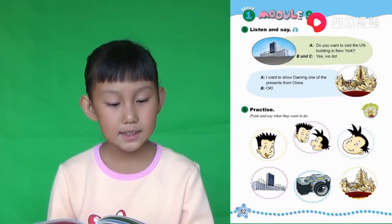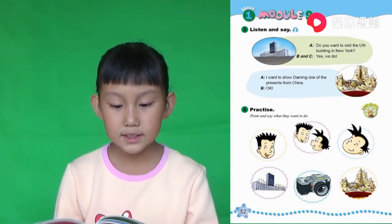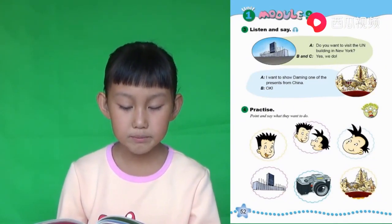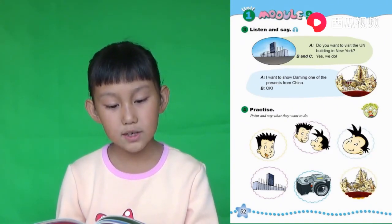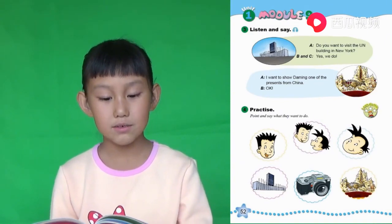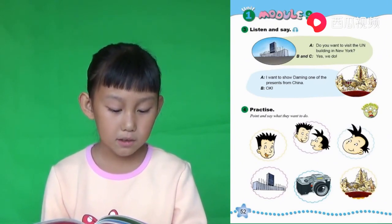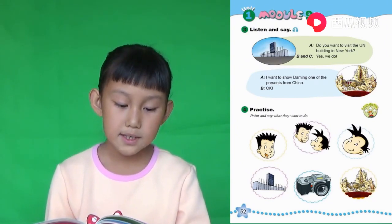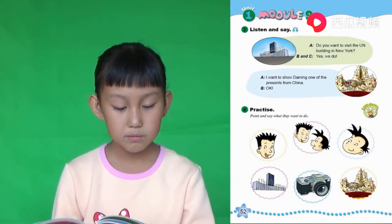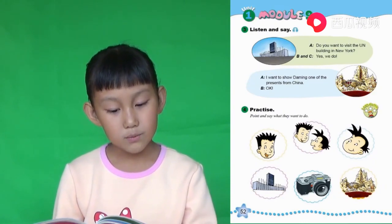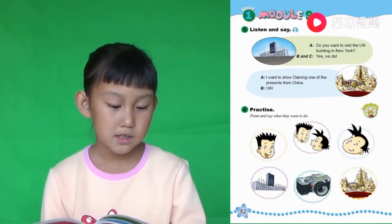3. Listen and say. Do you want to visit the UN building in New York? 你想去参观纽约的联合国大厦吗? Yes, we do. 是的,我们想要. I want to show 大明 one of the presents from China. 我想给大明看一个来自中国的礼物. OK.